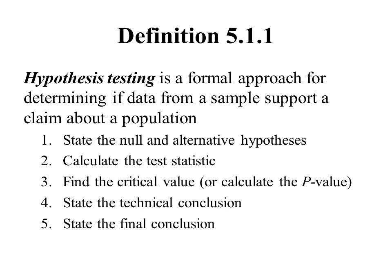There are five basic steps to doing hypothesis testing. The first step is to state what we call the null and alternative hypotheses. The second step is to calculate a test statistic. The third step is to find a critical value, or alternatively calculate something called a p-value. Then we state a technical conclusion, and then we state the final conclusion.